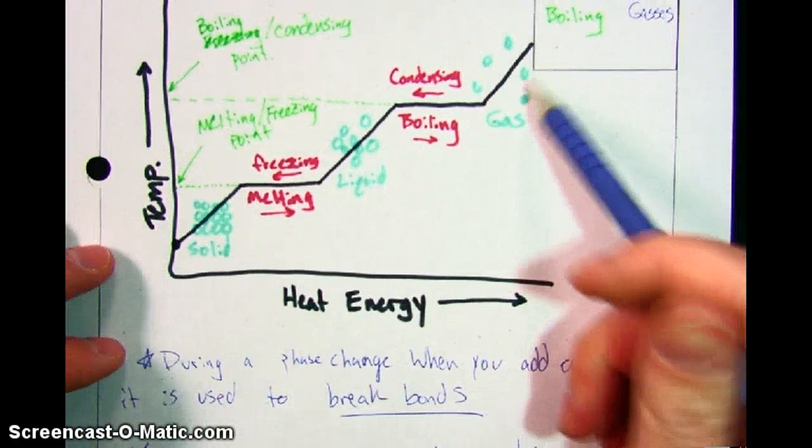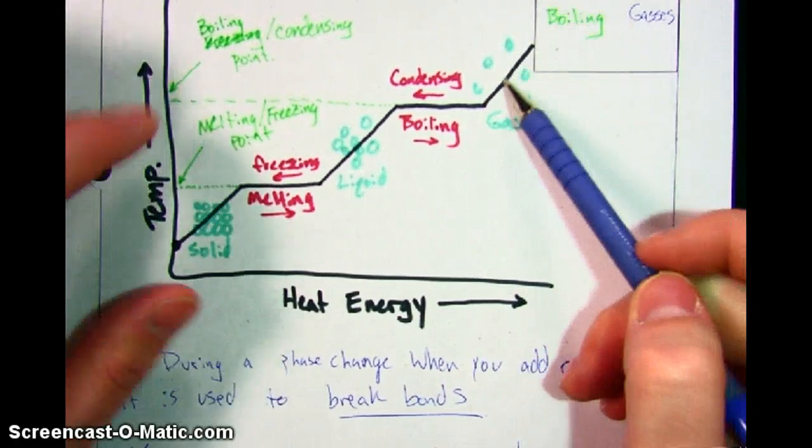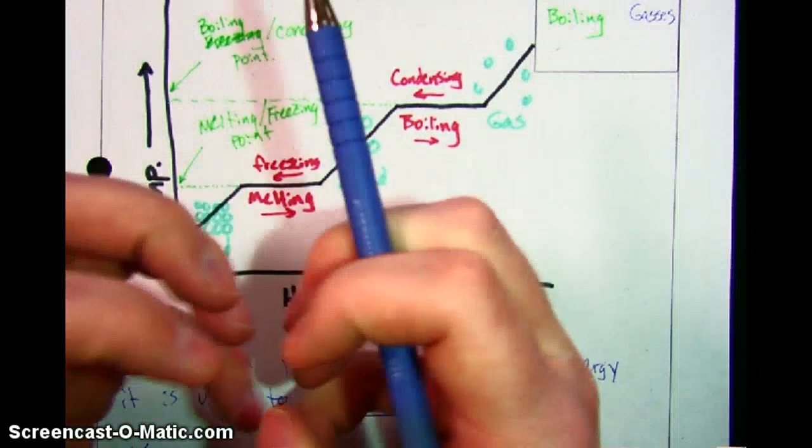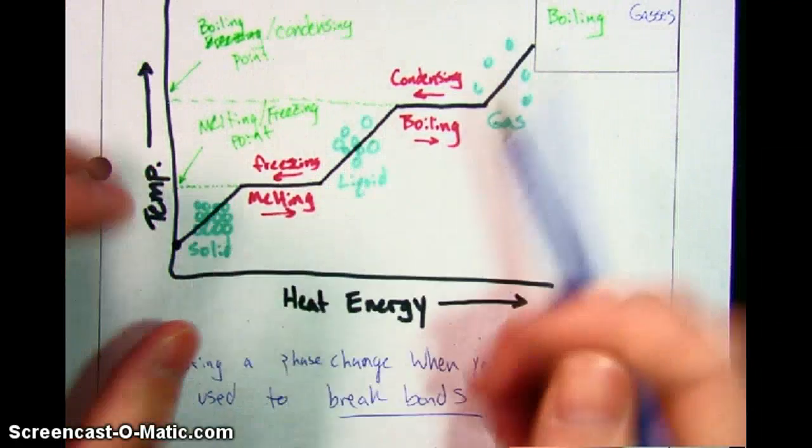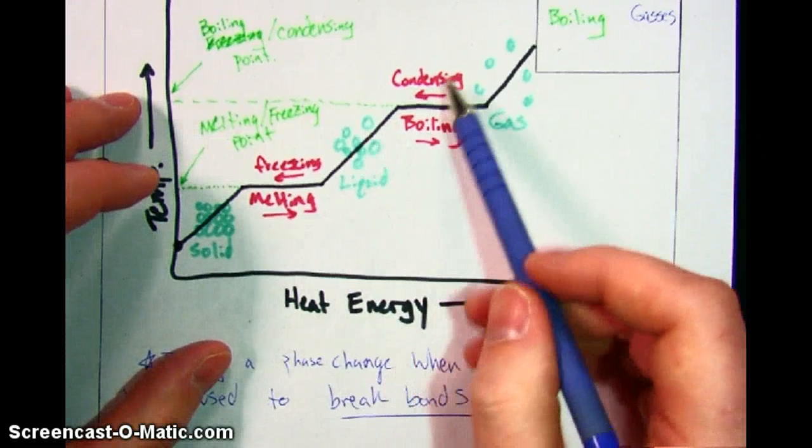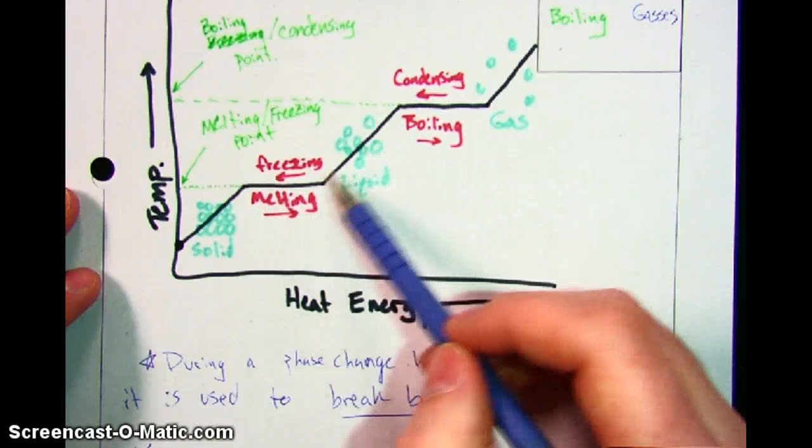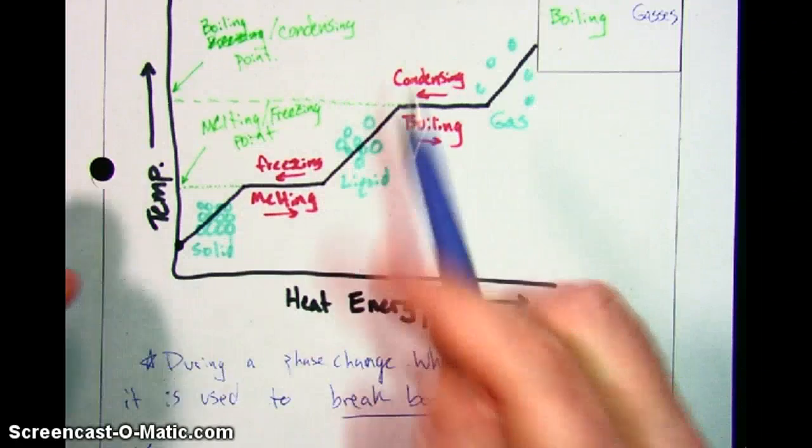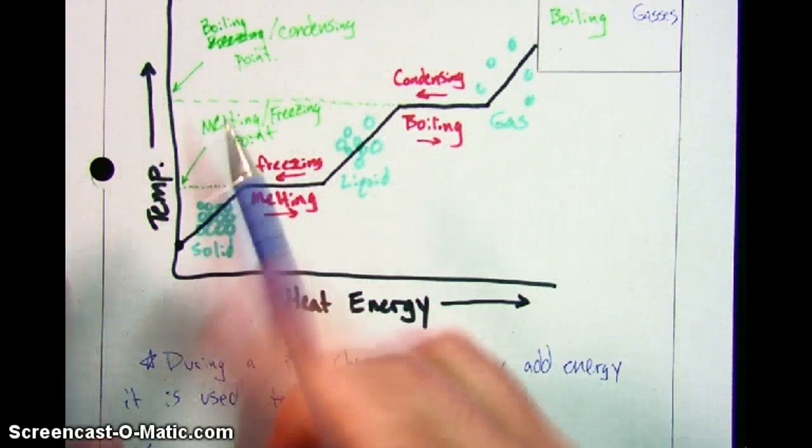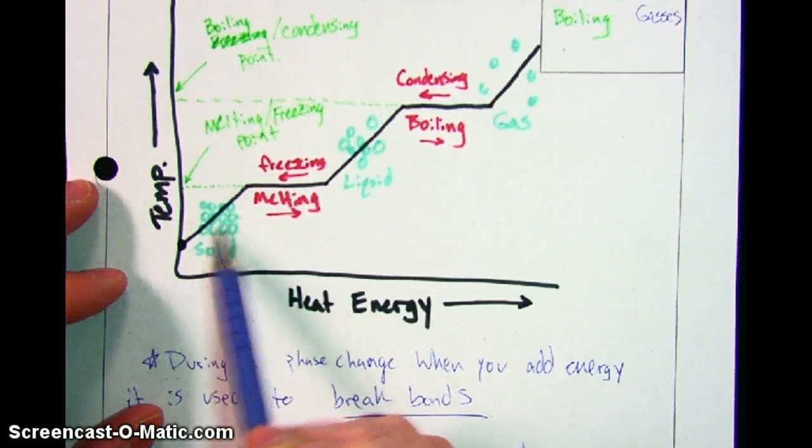So when you say, all right gas, give me some of your energy, instead of them giving it up from their temperature, they say, all right, well we're going to come together and form a tighter liquid, and that's where we're going to get the energy from to give it up. Once they're a liquid, same idea. As soon as they start freezing, they give up some of their energy and they get even closer packed together and get more organized in order to become a solid.